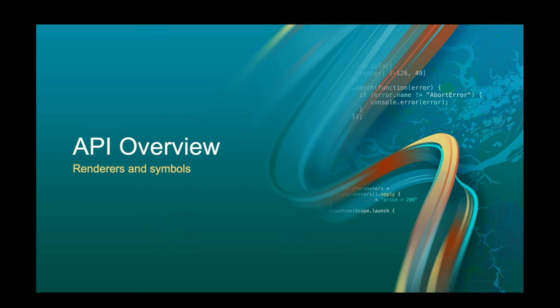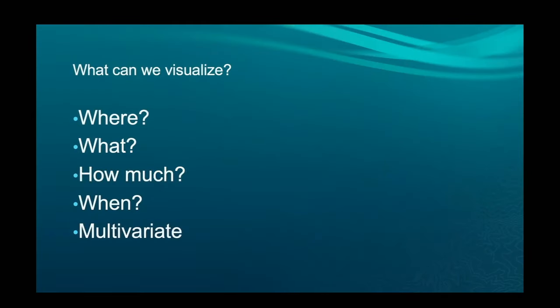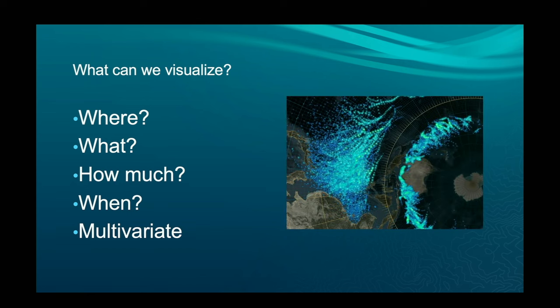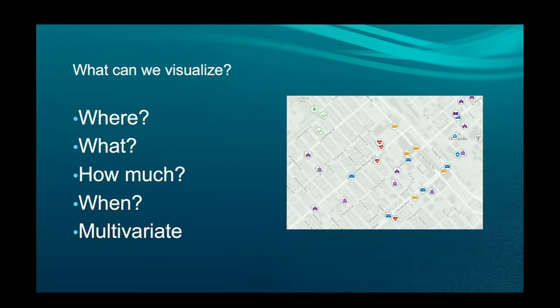Before we get into examples — we like to keep this pretty demo-heavy — we're going to do an overview of the API. First off, what is it that you can visualize in our API? It turns out there's a whole lot you can do. Of course, we can do the where — when you just plot or draw points on a map, that's telling you where something exists or happened. You can also do what.